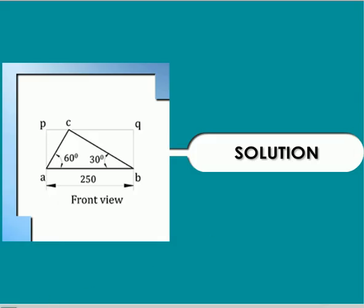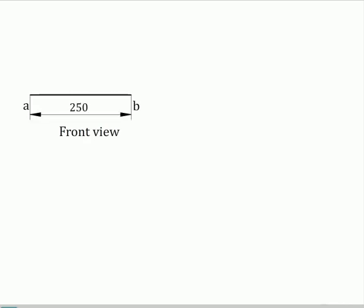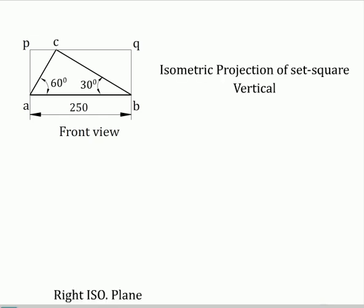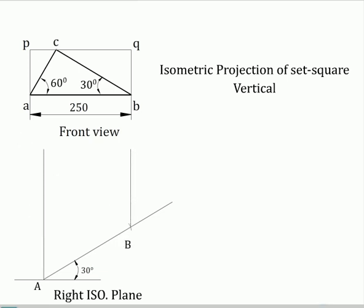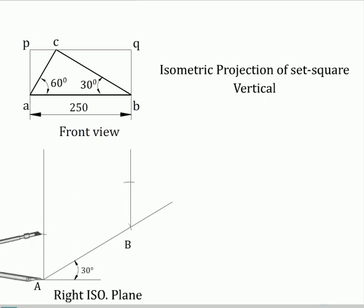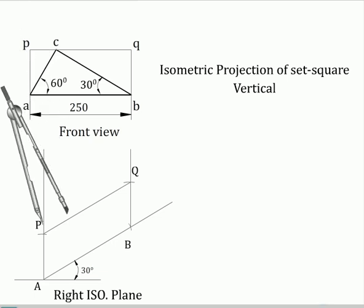Solution to example problem. Draw the isometric view of the Z-square enclosed in a box ABQP. Right isometric plane: draw one 30-degree making isometric axis and on it set AB with the measurement 250 mm. Now complete the isometric view of the box ABQP. On QP, mark point C with proper measurement taken from the front view, then join ABCD to complete the problem.